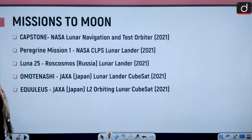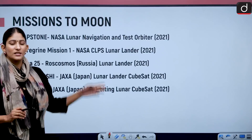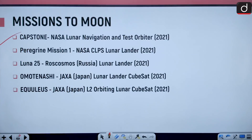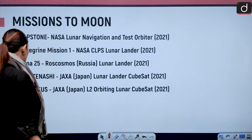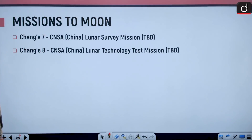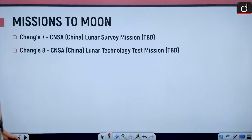Other missions to the moon, important from the perspective of prelims, include: Capstone — NASA Lunar Navigation and Test Orbiter, supposedly 2021; Peregrine Mission 1; Luna 25; Omotenashi; and Equilius. This information is from NASA's website. Also, China's Chang'e mission is also noteworthy.